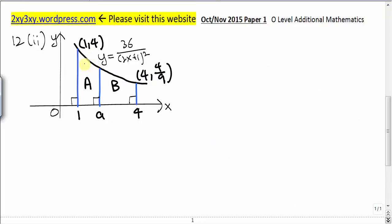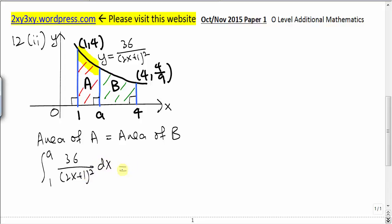In this question we are told that the area of A is equal to the area of B, and we are asked to find the value of A. What we are going to do is form an equation that equates the two areas together, and from that equation find the value of A. Area of A: we integrate the area under this curve from x equals 1 to x equals A.